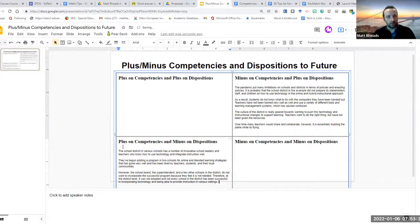Therefore, at the district level, it was not adopted and not every school in the district has been successful in incorporating technology and being able to provide instruction in various settings. So essentially here, there's a couple schools that are doing really well, but maybe a number of schools are floundering as a result of the district not fully adopting the successful program that was piloted in the first year of the pandemic. But at the beginning of the second year of the pandemic, it wasn't adopted district-wide. So essentially, a number of schools are building the airplane as it flies and could be floundering, and then a few schools in this scenario could be successful. But essentially we have a group that has the competencies in place, but as a whole in the organization there isn't that disposition to change the entire organization to utilize this program. So that would be essentially the probable future.